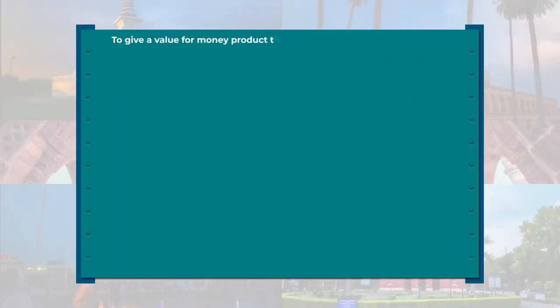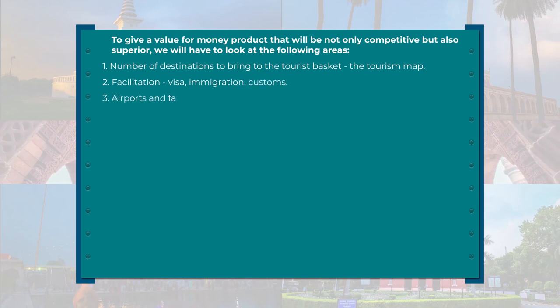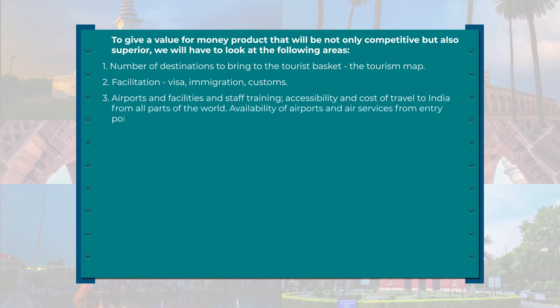What the mass tourist wants is also economy along with mass production. A country like India cannot afford to spread its resources for tourism too thinly. To give a value-for-money product that will be not only competitive but also superior, we have to look at the following areas. Number one: the number of destinations to bring into the tourist basket. We have to increase the number of destinations on the tourism map because already popular destinations are too burdened with over-tourism and we need new tourism products.